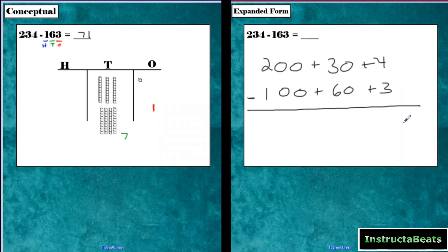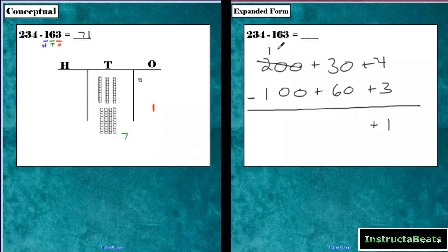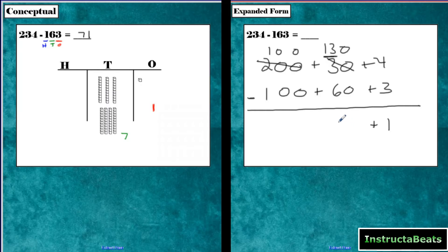We still go from right to left. 4 minus 3 is 1 — that matches exactly what I had in the ones place. Now I can't do 30 minus 60 — I couldn't do three 10s minus six 10s. So more on the floor, go next door and get 10 more. We're not really getting 10 ones, we're getting 10 tens because this is a place value. So when we borrow, this becomes 100 going to the tens place, just like with the base-10 blocks. Now I don't have 30, I have 130 because I have 13 tens, which is worth 130. So 130 minus 60 is 70.